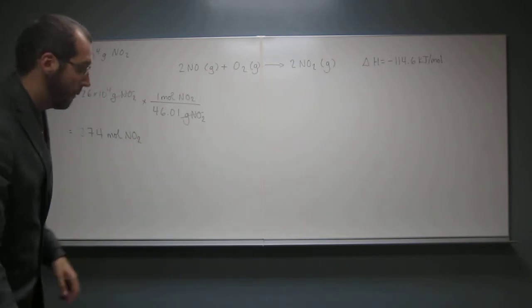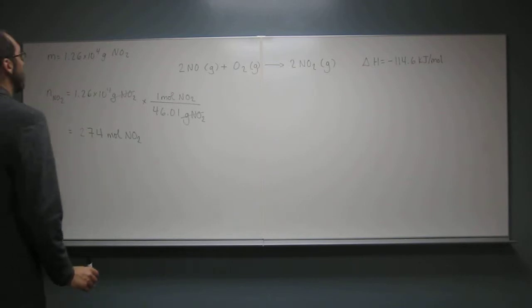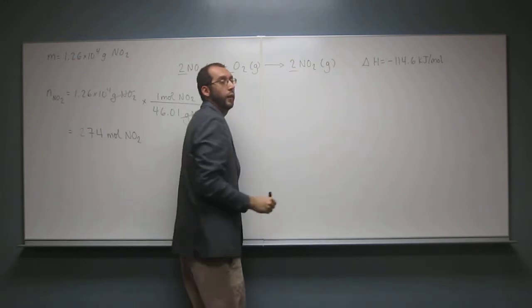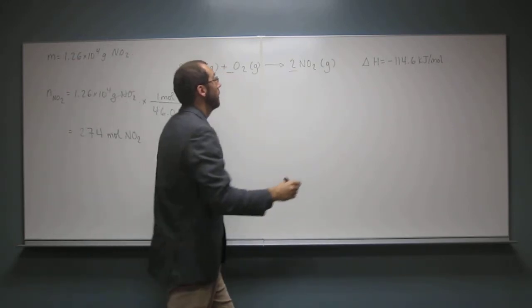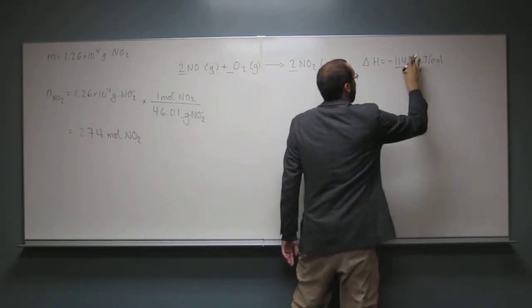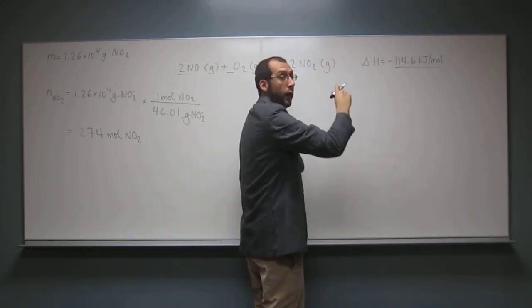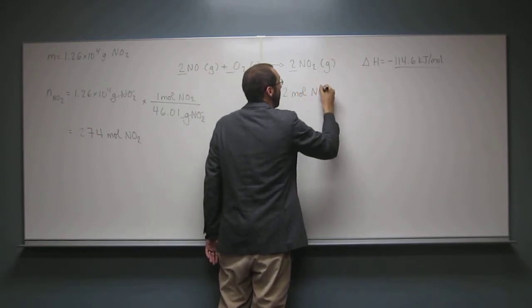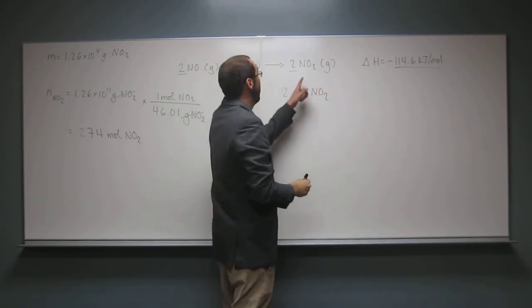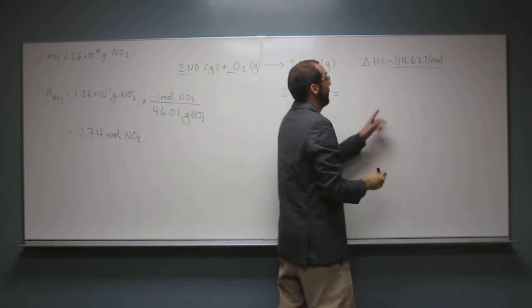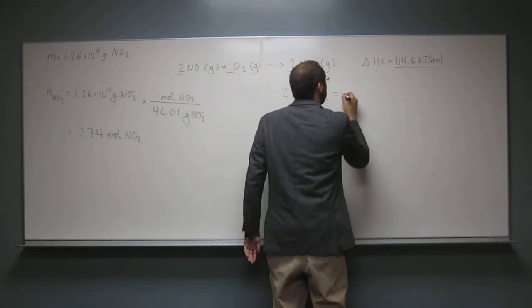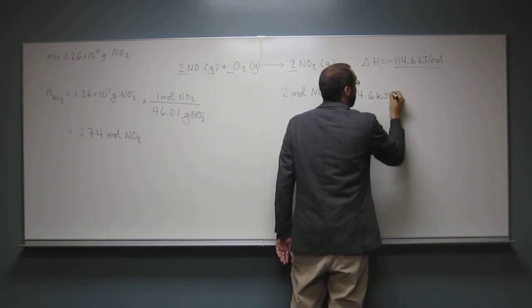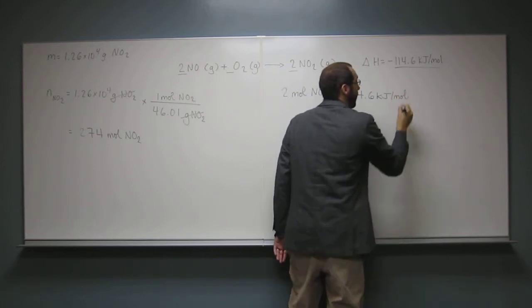So the other thing we know, remember from the chemical equation, we can use these coefficients as a 1 then, right, to convert from one to the other. But we can also use this number as a conversion factor for those as well. So what we have here is for every two moles of nitrogen dioxide, right, does that make sense? That equals this amount of heat given off. So we've got negative 114.6 kilojoules per mole.